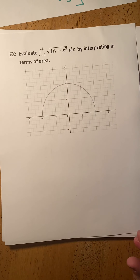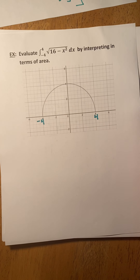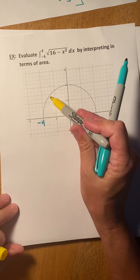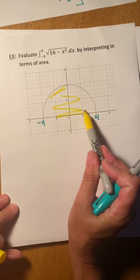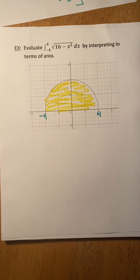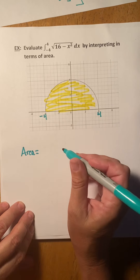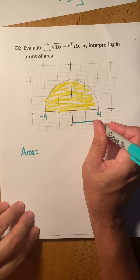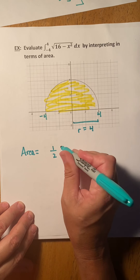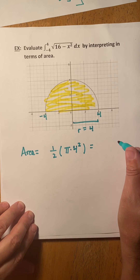Let's look at this: evaluate the integral from negative 4 to 4 of the square root of 16 minus x squared. That's a semicircle, and we're looking for this area. The area of a circle is pi r squared. Here r is 4, but we only have half the circle, so it's one-half times pi times r squared, which is 8 pi.